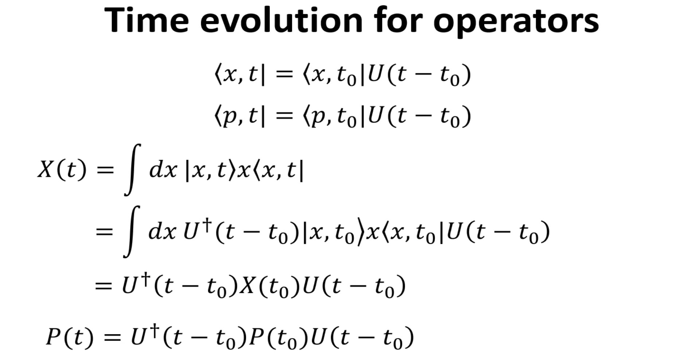The property of the unitary operator means that u dagger equals u inverse. The time evolution operator allows us to relate the basis x and p bra at later time to that from earlier time as shown. According to the spectral theorem, the position operator at time t can be written as an integral of the outer product of x ket at time t, multiplied by x.